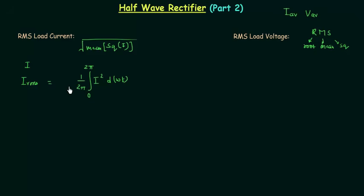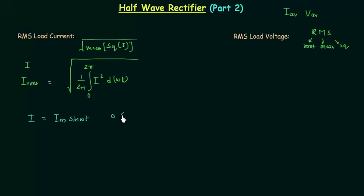Now I will find out the square root of the mean and simplify this. From the last lecture we know current I is equal to I_M sin(ωt) where I_M is the maximum value of load current when ωt is from 0 to π, and the load current I is equal to 0 when ωt is from π to 2π. I will use this condition to perform the integration.